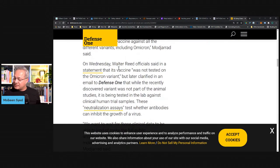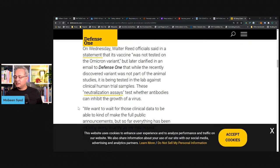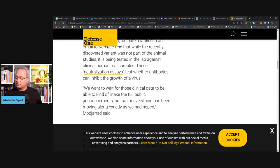On Wednesday, Walter Reed officials said in a statement that its vaccine was not tested on Omicron, but later clarified in an email to Defense One that while the recently discovered variant was not part of the animal studies, so they've done animal studies, it is being tested in the lab against the clinical human trial samples. These neutralizing assay tests where their antibodies can inhibit the growth of virus, so they're putting them in a lab.